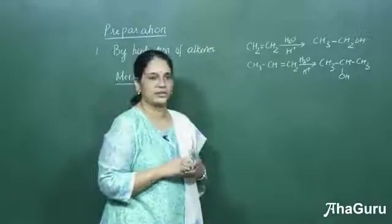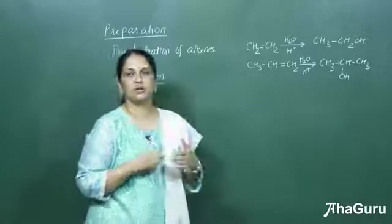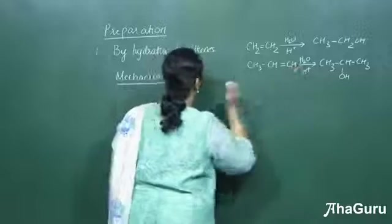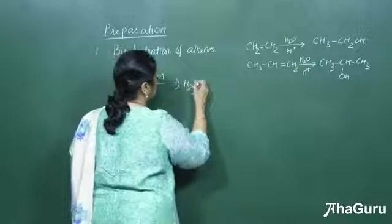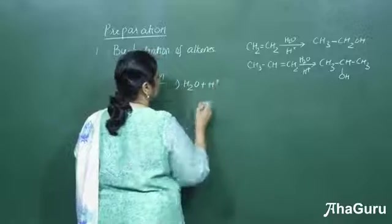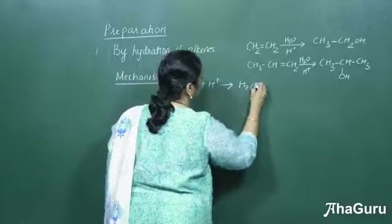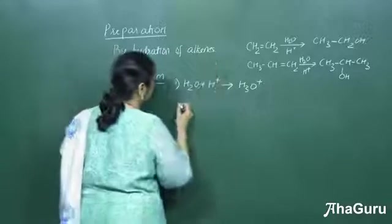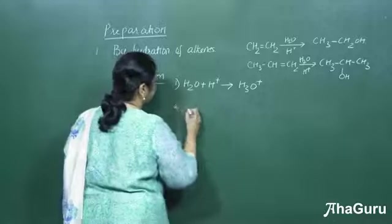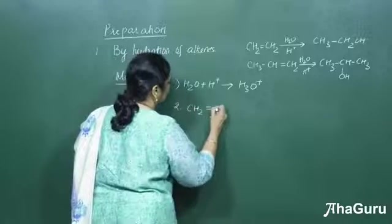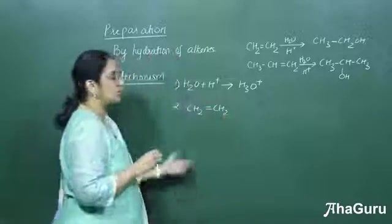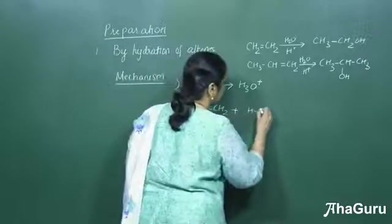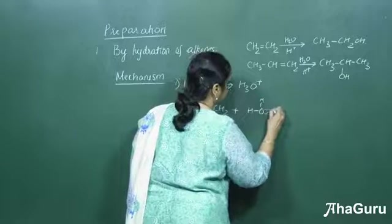Now let us see the mechanism of hydration of alkenes — it follows three steps. First, H₂O plus H⁺ gives H₃O⁺. This H₃O⁺ will get added across the double bond of the alkene. So in step two, we have CH₂=CH₂, where protonation of the alkene takes place — we consider H⁺ acting on the double bond.